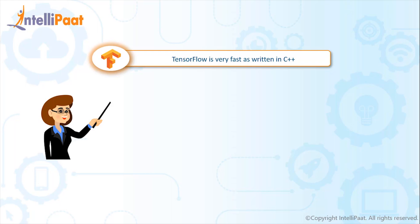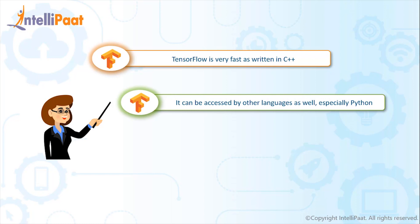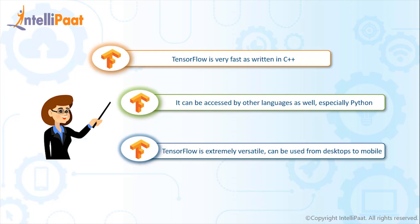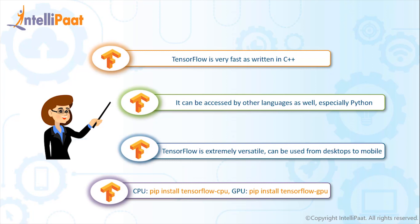TensorFlow is very fast because it's written in C++, but it does not restrict itself to that language — it can be controlled or accessed by other languages, particularly Python. Another key feature is that TensorFlow is extremely versatile: it can run on many different platforms, from a desktop to the cloud to mobile devices. It can also run on CPU or GPU. To install TensorFlow on CPU or GPU, you can use the respective commands shown.